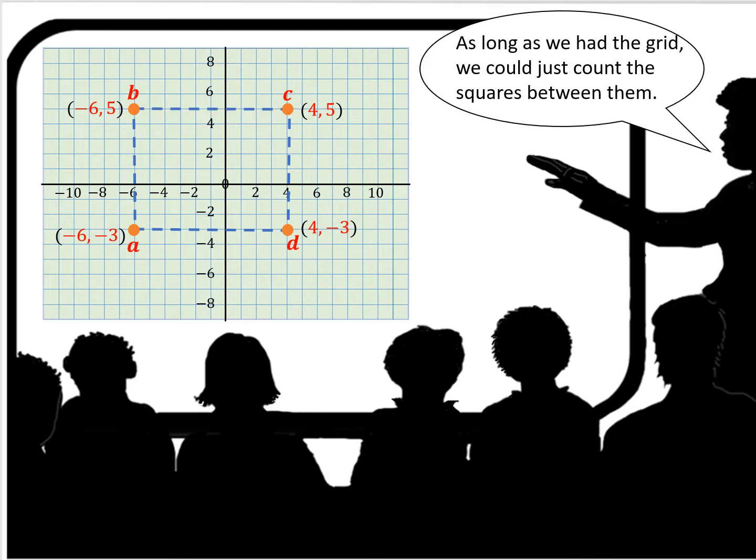As long as we had the grid, we could just count the squares between them. 1, 2, 3, 4, 5, 6, 7, 8, 9, 10.